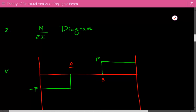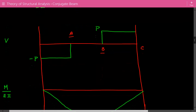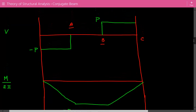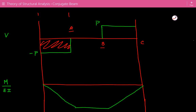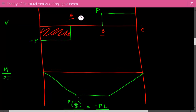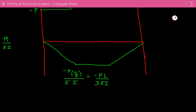Support A is at this location, support B here, and point C here. We have negative shear from the left end all the way to support A, then zero shear between A and B, and then shear equal to P from B to C. Then we construct the M/EI diagram — the bending moment equals the area of the shear diagram. The area of this rectangle is negative P times L/3 (base times height), so the bending moment divided by EI gives a maximum absolute value of negative PL over 3EI.